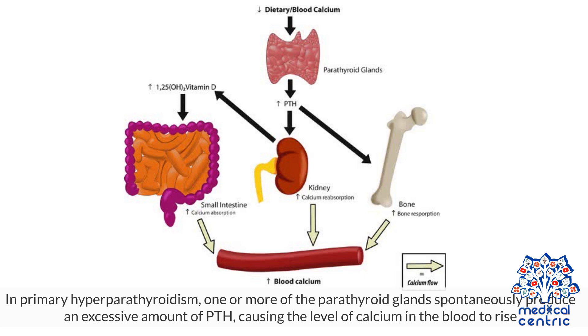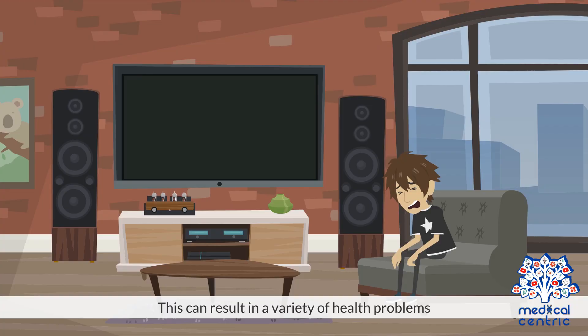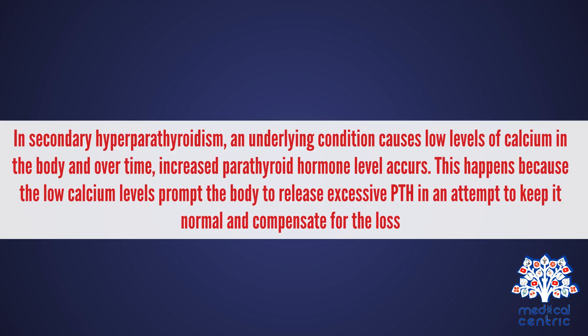In primary hyperparathyroidism, one or more of the parathyroid glands spontaneously produces an excessive amount of PTH, causing the level of calcium in the blood to rise. This can result in a variety of health problems. In secondary hyperparathyroidism, an underlying condition causes low levels of calcium in the body, and over time, increased parathyroid hormone level occurs. This happens because the low calcium levels prompt the body to release excessive PTH in an attempt to keep it normal and compensate for the loss.